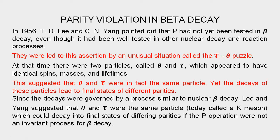In the last lecture, we mentioned the tau-theta puzzle. Theta and tau are particles with identical spin and masses, which suggested that they were the same particle, but their decays lead to final states of different parities. These decays are governed by processes similar to beta decay, that means weak interactions. That is why Li and Yang suggested that theta and tau were the same particle — called the K-meson — which could decay into final states of differing parities if the parity operation were not an invariant process in beta decay.